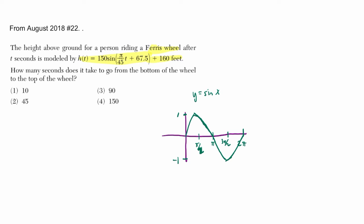Now, they're asking you how many seconds does it take to go from the bottom to the top? Now, there's a lot of differences here in our function, right? It's shifted around, you got a phase shift, it's translated up, there's an amplitude of 150.